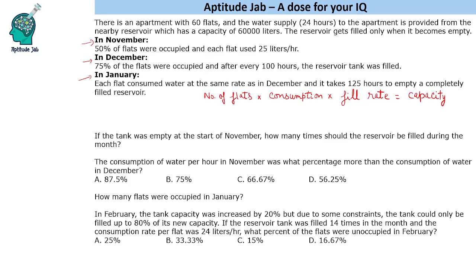The first question asks: if the tank was empty at the start of November, how many times should the reservoir be filled during the month? Since 50% of the flats were occupied, that means 30 flats are occupied. Each flat uses 25 liters per hour, for 24 hours a day, over 30 days. We divide the total consumption by 60,000 (the tank capacity). 24 × 25 = 600, so the tank was filled 9 times during the month.